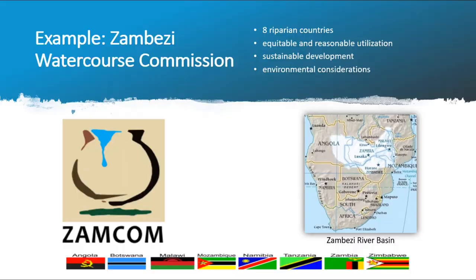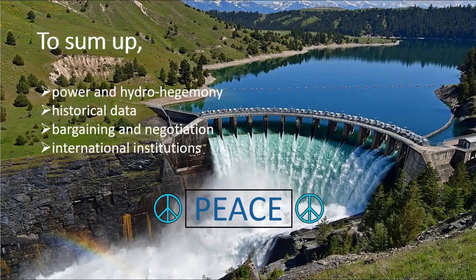An example of a river basin-specific international organization is the Zambezi Watercourse Commission. Although there have been tensions between riparian countries, they didn't turn into violence, and the establishment of ZAMCOM in 2014 eased tensions and raised cooperation. The Zambezi River Basin includes eight riparian countries and is located in one of the world's poorest regions. Therefore, ZAMCOM was a huge success for addressing the critical problems of the region and securing peace. ZAMCOM's objective is to promote the equitable and reasonable utilization of the water resources of the Zambezi Watercourse, as well as the efficient management and sustainable development thereof. The Commission also concerns itself with environmental problems and protection of wildlife within the basin. Considering its scope and all riparians' active participation, ZAMCOM is a good example of an intergovernmental organization dealing with transboundary waters.